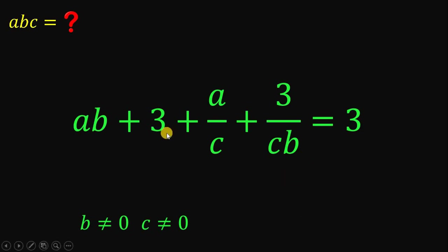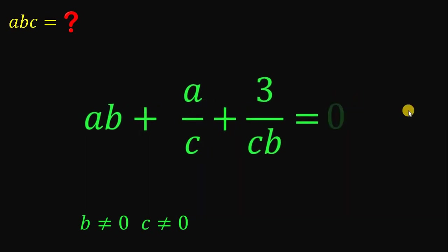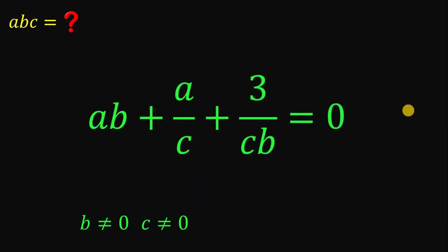Now let's simplify by subtracting 3 from both sides. The 3 on the left and the 3 on the right cancel out, leaving us with 0 on the right-hand side.